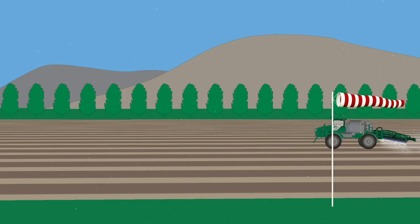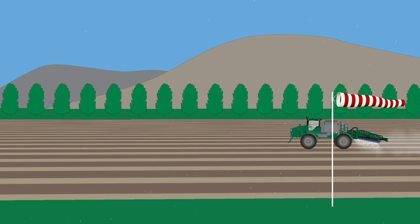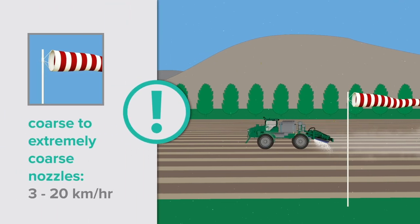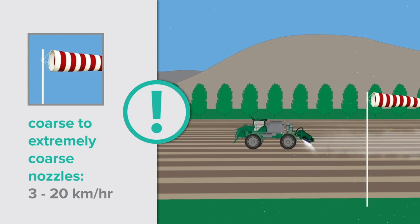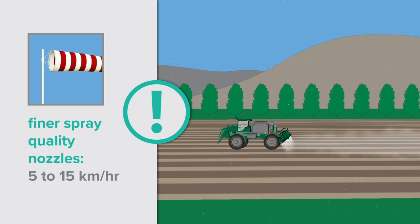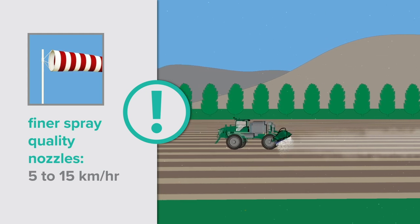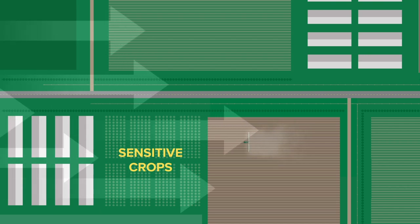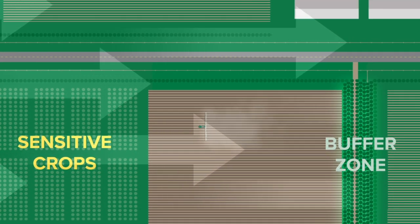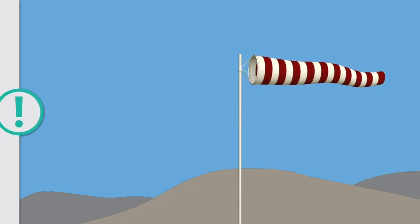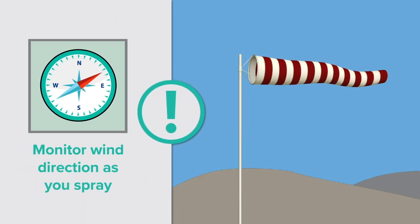High wind speeds are the primary cause of off-target spray movement. Reduce this risk by spraying when the wind is between 3 and 20 kilometres per hour for coarse to extremely coarse nozzles, and 5 to 15 kilometres per hour for finer spray quality nozzles. Only spray when wind direction is away from sensitive crop areas — this may change if there's a buffer zone. Remember to keep monitoring wind direction as you spray as it may change over time.